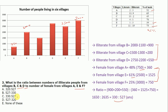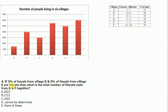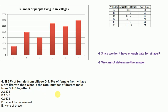Question 4: If 3% of females from village D and 5% of females from village E are literate, then what is the total number of literate males from villages D and F together? However, we cannot solve this question since we don't have enough data for village F. We cannot determine the answer, so option D is correct.